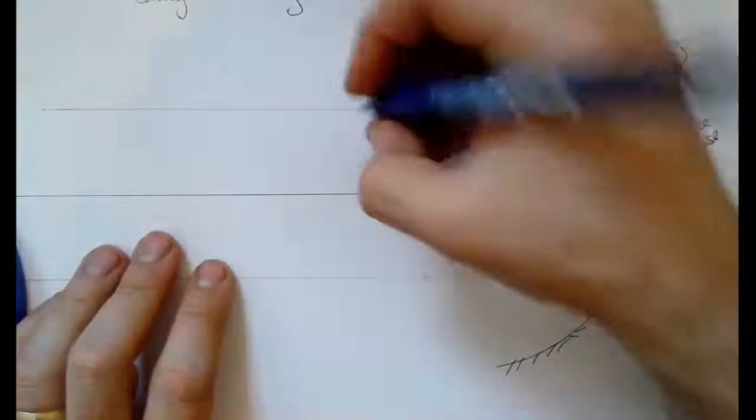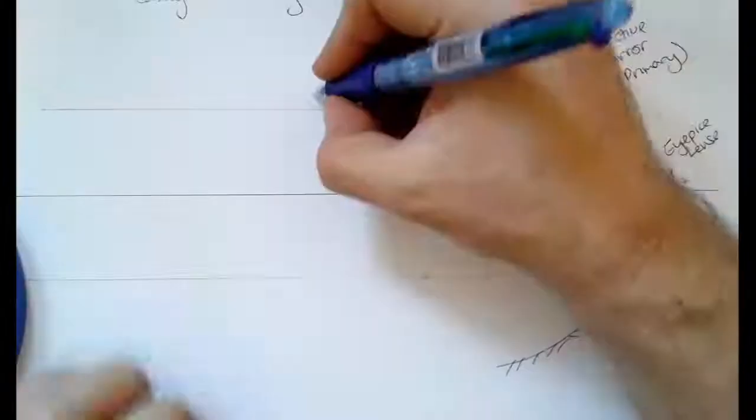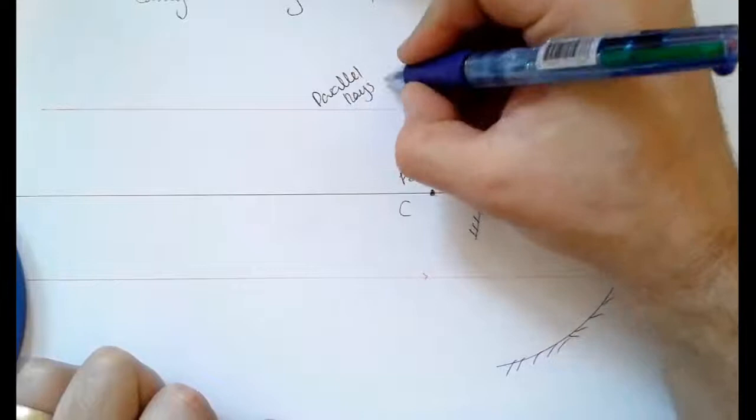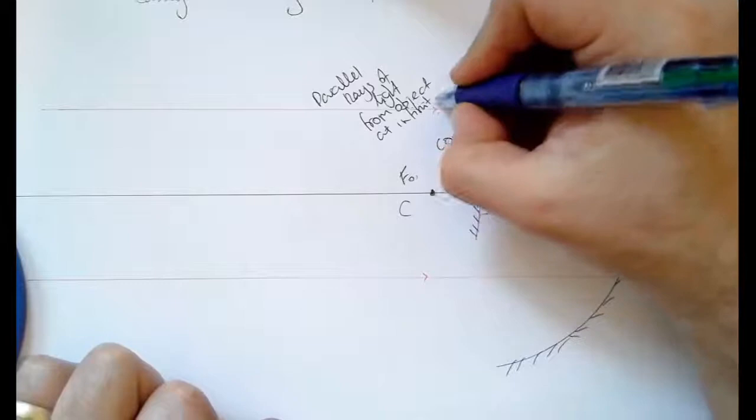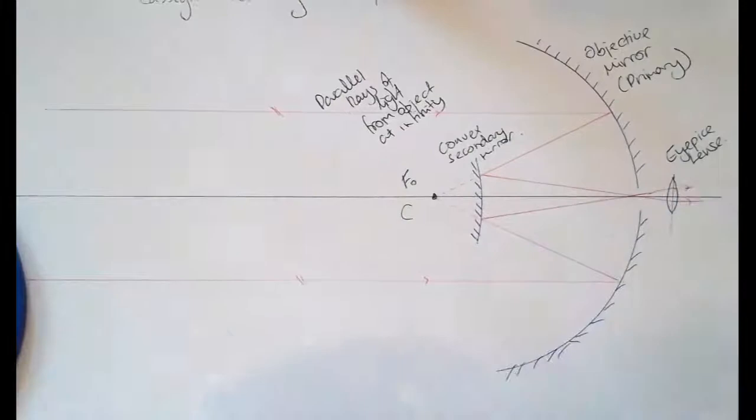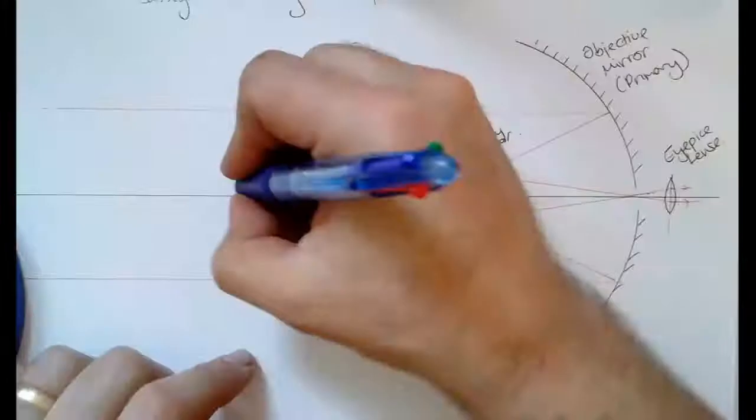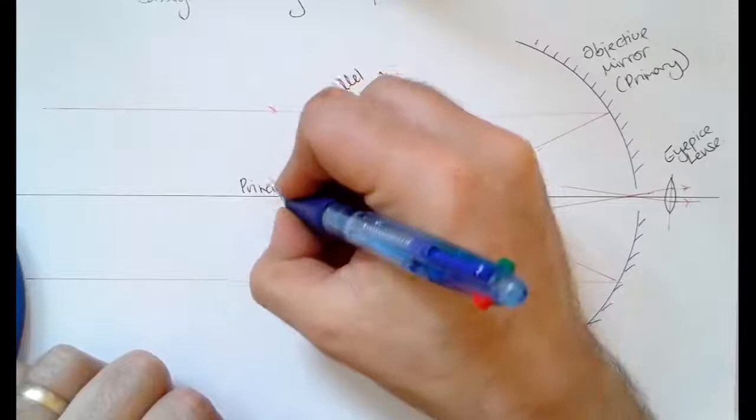What else do we need? Let's label this up with parallel rays of light from an object at infinity. Let's just show that these are parallel. Let's put the principal axis here. And I think that's everything we need.